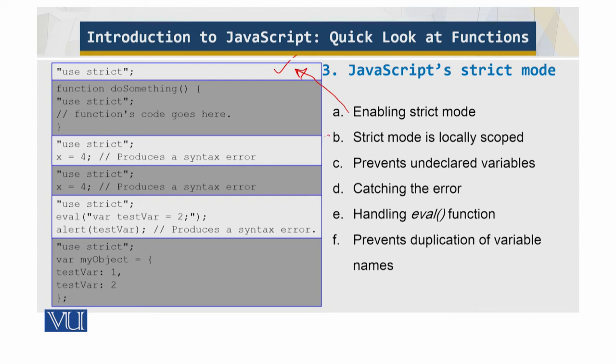The strict mode helps catch typographical errors by preventing undeclared variables. All variables in strict mode need to be instantiated prior to the use over here.